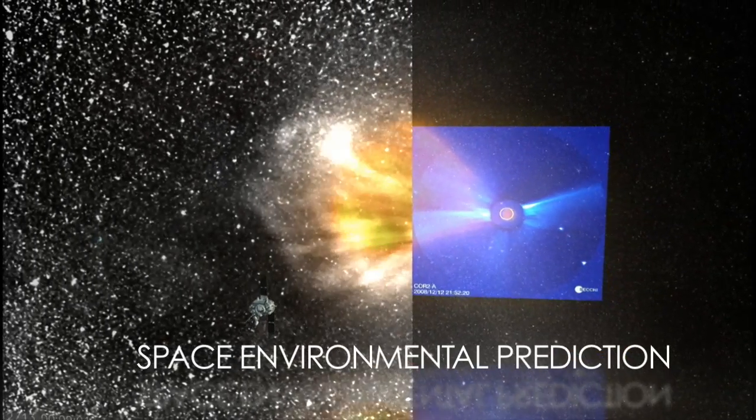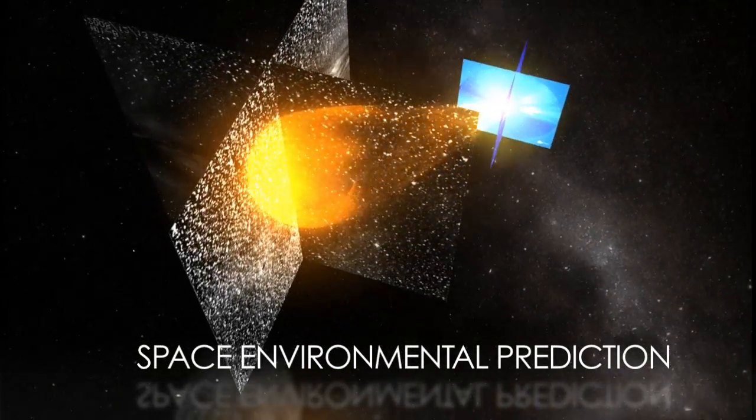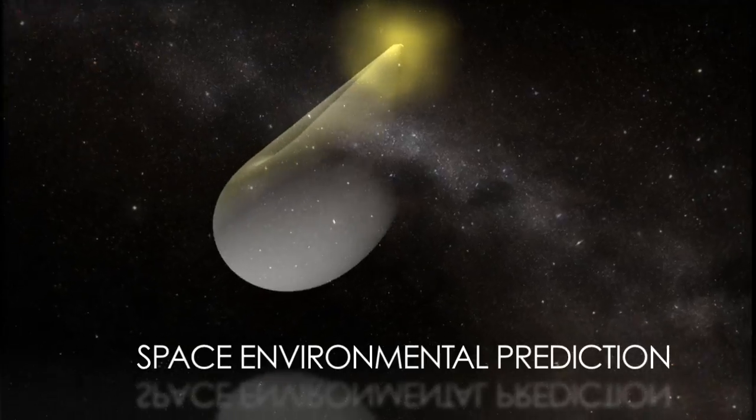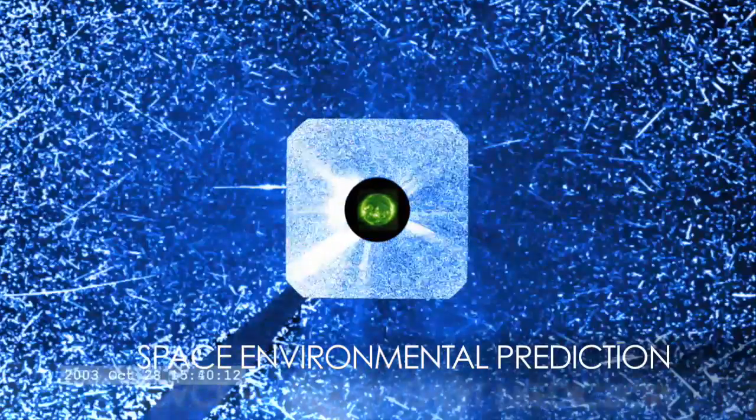By taking high-resolution images of the Sun, modeling solar storms, and using multiple observatories, NASA will improve our ability to predict not only when solar storms will hit, but how they will affect our daily lives.